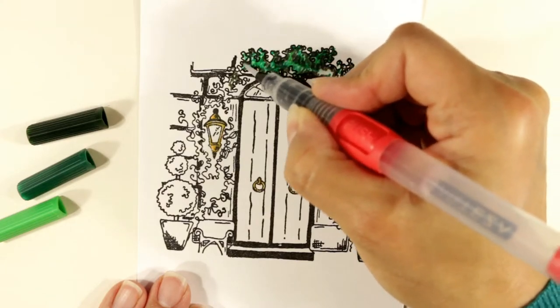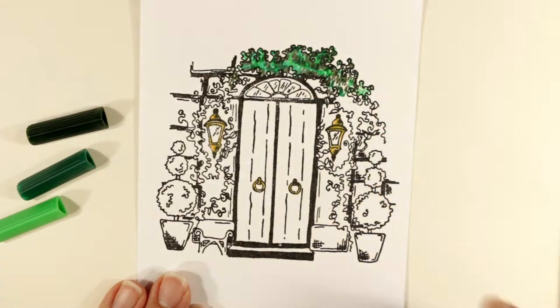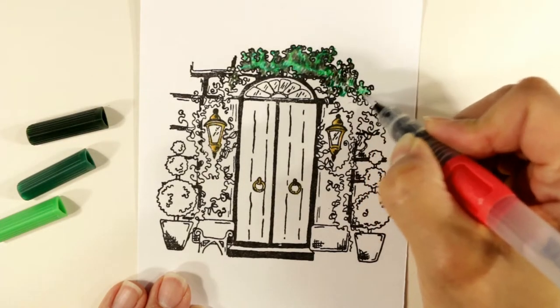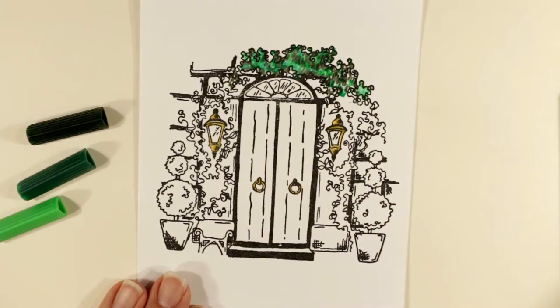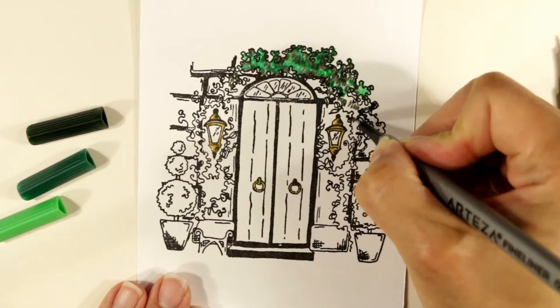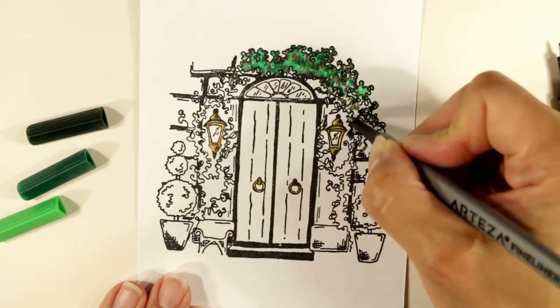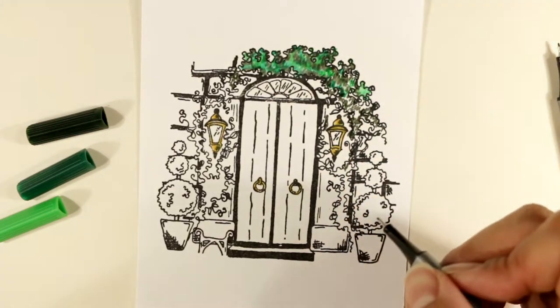The fine liner pens give a nice, really detailed, fine, sketchy line. And then I just blended the colors out with a water brush. This is an Arteza water brush, the finest point out of their six water brush set. And I'm just kind of loosely going in and coloring this.